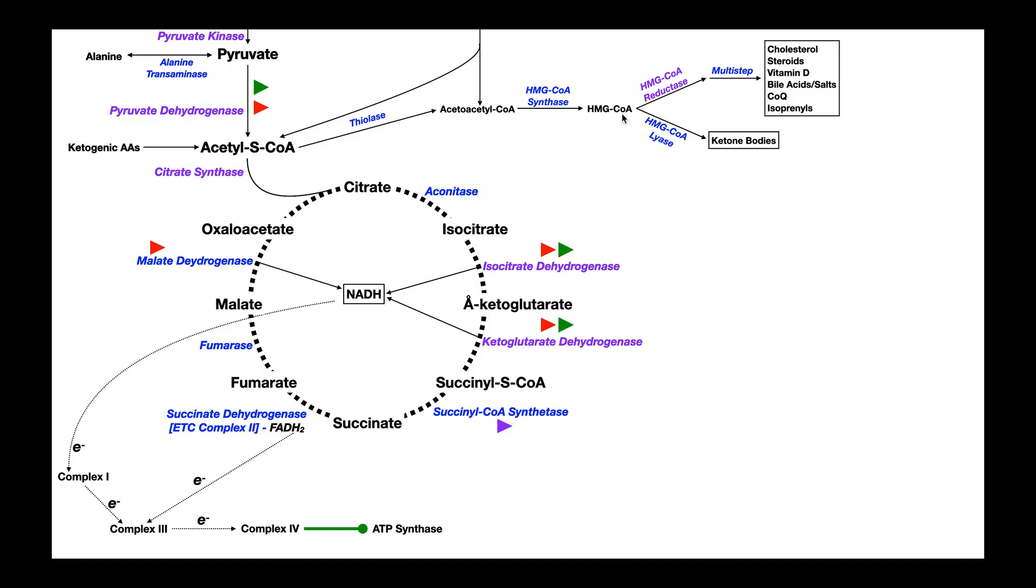So HMG-CoA is a branch point right here, and what happens to it depends on the state of the body. So if the body's in a fasting state, then HMG-CoA reductase will be allosterically turned off, and you'll by default use HMG-CoA lyase to produce ketone bodies for energy. However, if you're in a fed state and there's plenty of energy, HMG-CoA reductase will be turned allosterically on, and you'll be producing these things. So this is an important regulated process in the body.